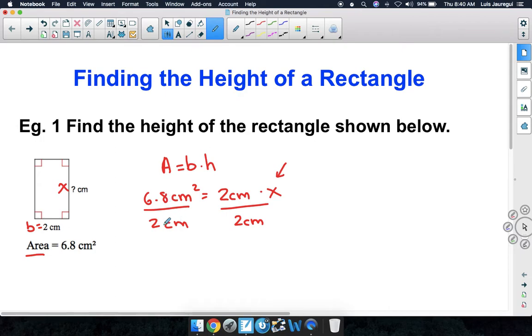Okay, so now 6.8 divided by 2 gives you 3.4, and centimeters squared divided by centimeter is centimeters. That equals 2 centimeters divided by 2 centimeters, which is 1, and 1 times x is just x.